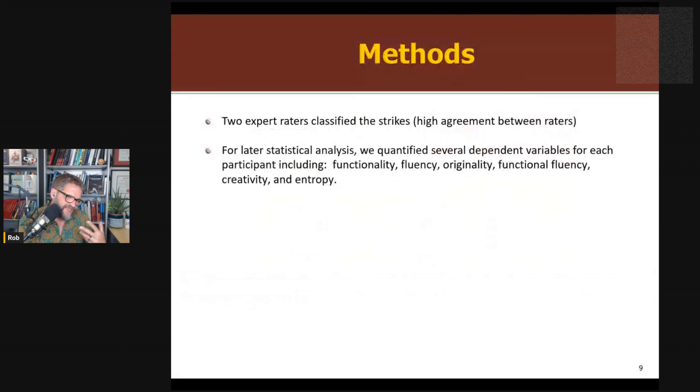They tried using machine learning to classify the different things, but none of those really worked. They had to go with expert raters, so someone watching the video and classifying—that's a right-handed jab, that's a roundhouse, and so on. And they did it the right way though. They had two different raters that rated them independently. They measured their inter-rater agreement and presented that information, which was quite high. What they did for each of the movements is they quantified several aspects of it: functionality, fluency, originality, functional fluency, creativity, and entropy. Let me show you what each of those mean.